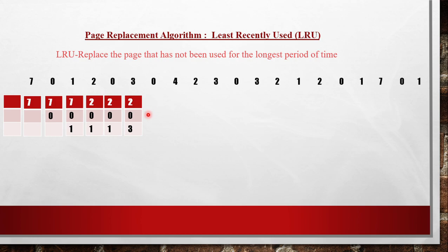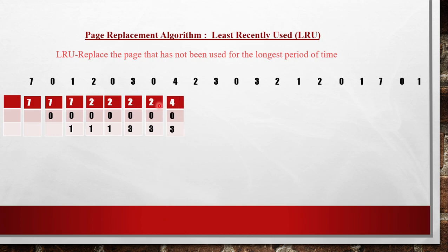Next we need page 0 — 0 is already present, so there is no change in frames. It remains as 2, 0, 3. Next, we need page 4. Among 2, 0, and 3 in memory, 2 was used furthest back compared to 0 and 3. So 2 should be replaced, and 4 takes the place of 2.